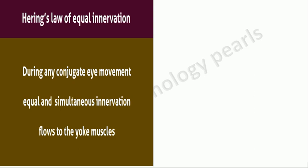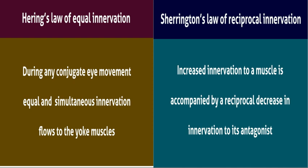Sherrington's law of reciprocal innervation states that increased innervation to a muscle is accompanied by a reciprocal decrease in innervation to its antagonist.